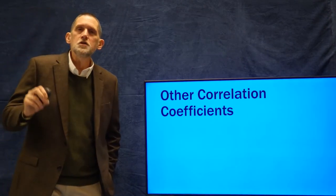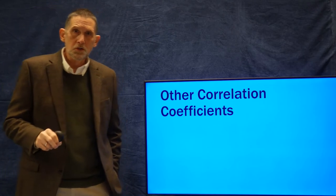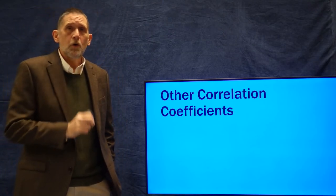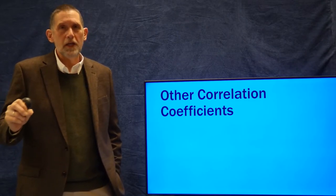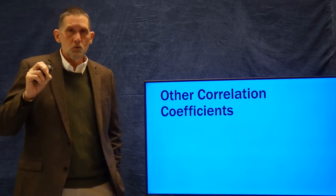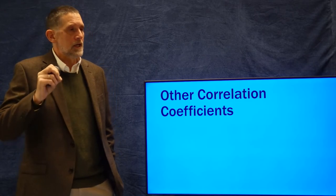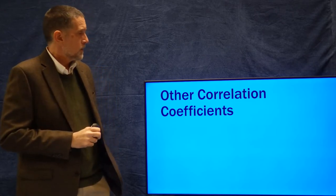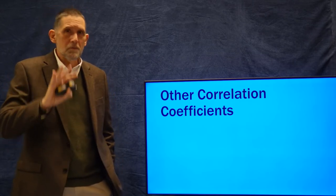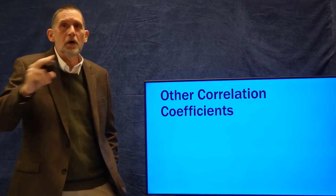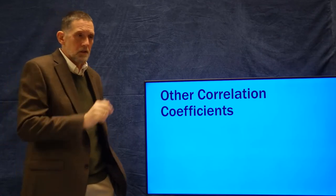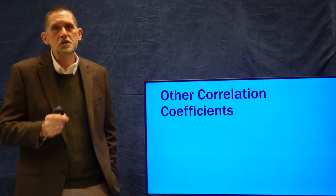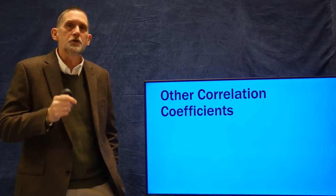The Pearson correlation coefficient is the most widely used, and we're going to use it all the time. In the next topic, we'll look at a very powerful analytical technique called regression, which is based on the Pearson correlation coefficient. So it's important to remember this: it's the average cross product of the z-scores. But there are other correlation coefficients for other types of data.